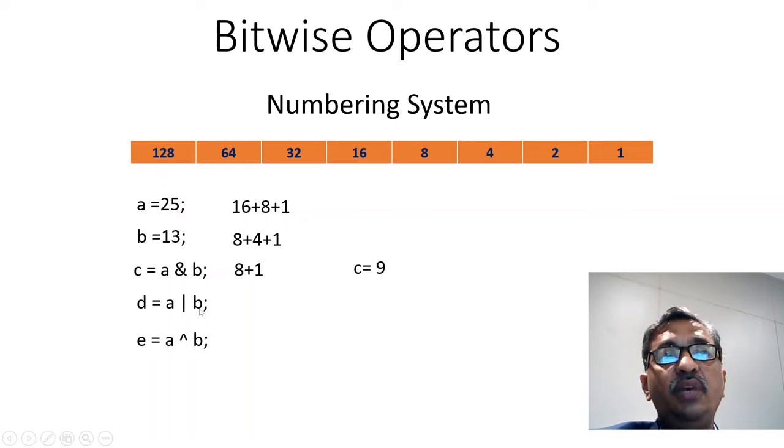In OR, D is equal to A or B. So we have to consider the numbers which are present in both the numbers. So 16 plus 8 plus 4 plus 1, which is nothing but 29.